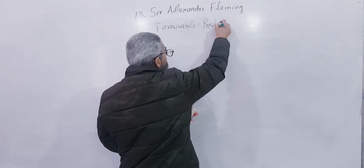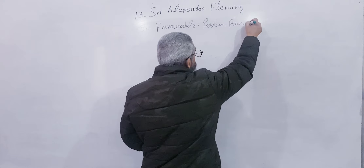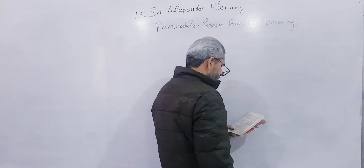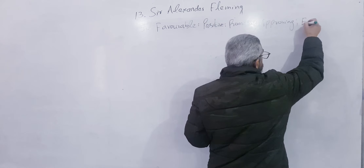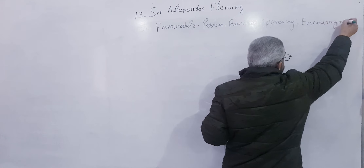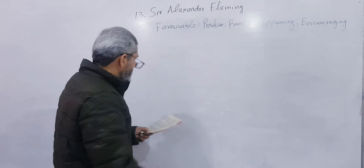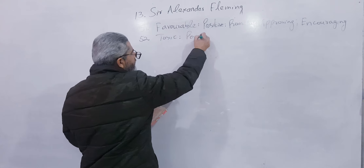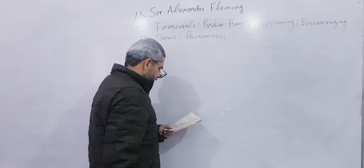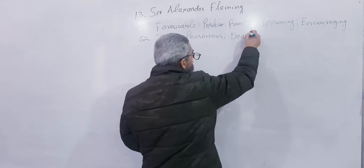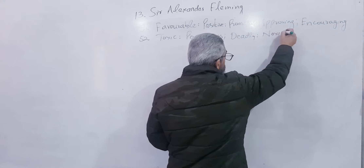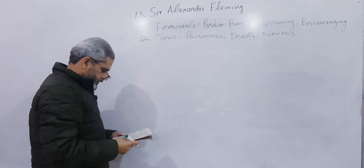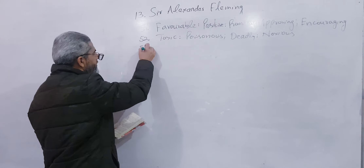Number 52: Toxic — zehreela (poisonous). Write poisonous, deadly, noxious, N-O-X-I-O-U-S.